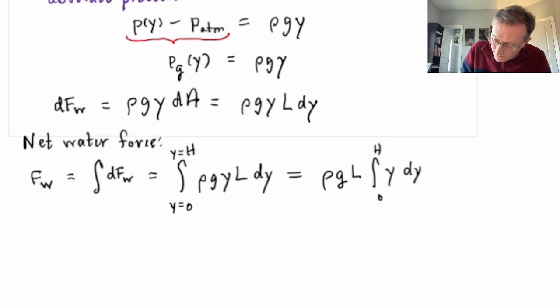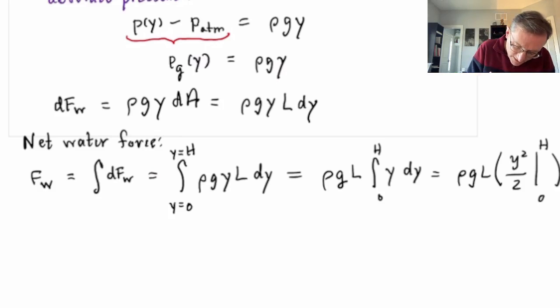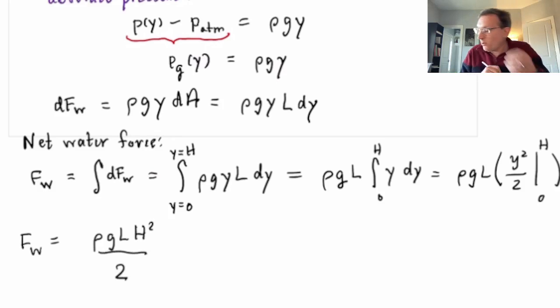All right, so this is rho g L and then y squared over 2. And we've got to put in the limits of our integral from 0 to H. And that's not too hard to do. When you put in those limits, you get rho g L H squared over 2. And that is our symbolic answer.